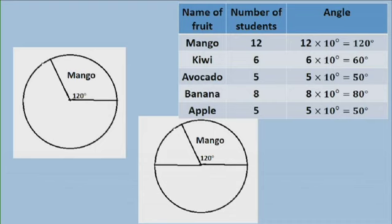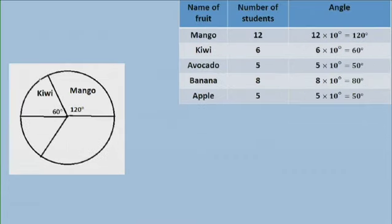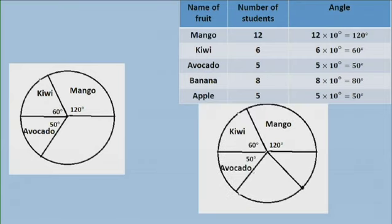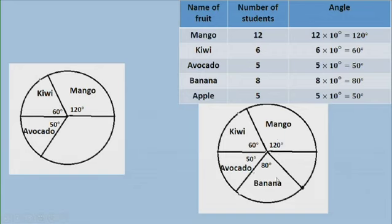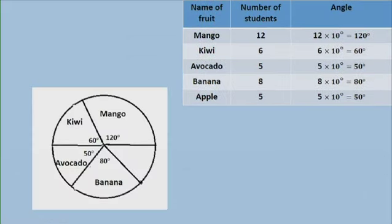For Kiwi, I measure 60 degrees. In the same way, I measure Avocado at 50 degrees, Banana at 80 degrees. For the last one, Apple, it should be 50 degrees. You need to check — if it is 50 degrees, it means you have correctly measured the other sectors. If you do not get 50 degrees for the last sector, you have most probably not measured one of the other sectors correctly. So the last one, Apple, is 50 degrees.